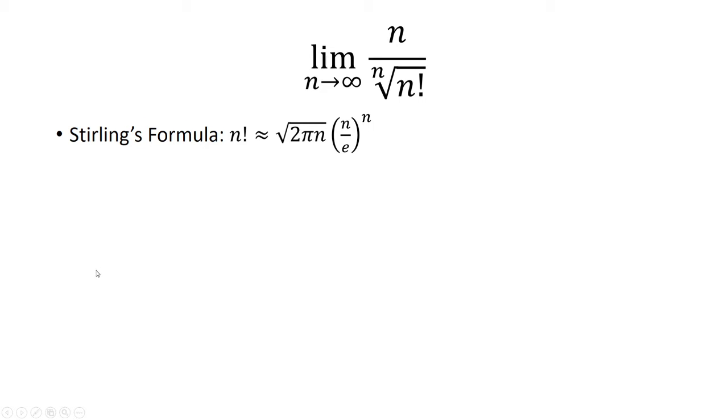In order to solve this limit, we have to use Stirling's formula. So n factorial is approximately the square root of 2 pi n times the quantity n over e raised to the n power.